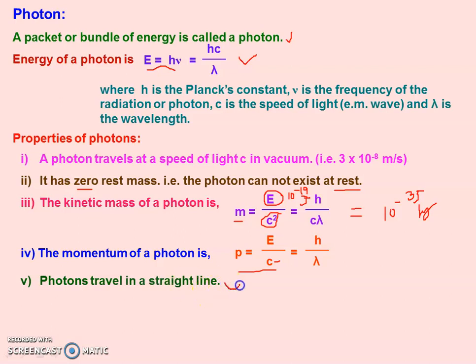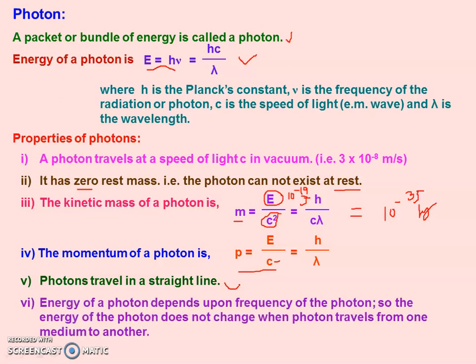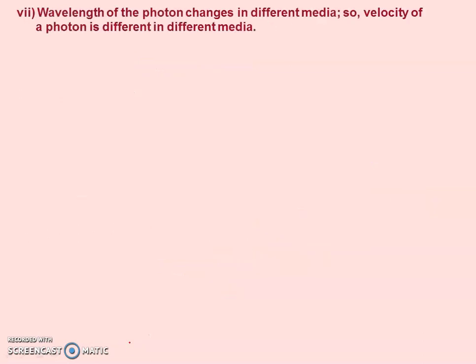A photon always travels in a straight line — this is a property of light. The energy of a photon depends on frequency, so the energy of a photon does not change when it travels from one medium to another. If a photon travels from a denser to a rarer medium or rarer to denser, its frequency never changes. However, the wavelength of the photon changes in different media, and hence the speed also changes. So whenever light travels from one medium to another, the wavelength and speed change but frequency remains constant.